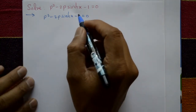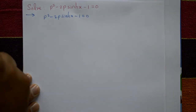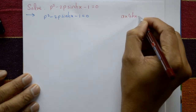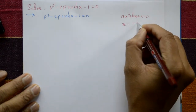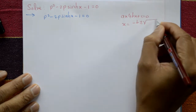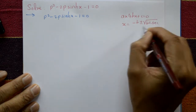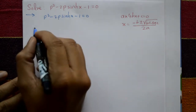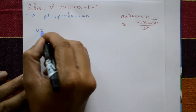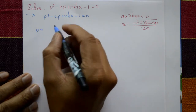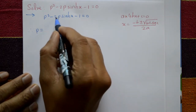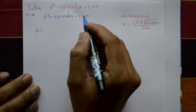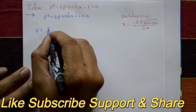So we use the quadratic formula. The quadratic equation is ax² + bx + c = 0, giving x = (-b ± √(b² - 4ac)) / 2a. Applying this: a = 1, b = -2·sinh(x), and c = -1.